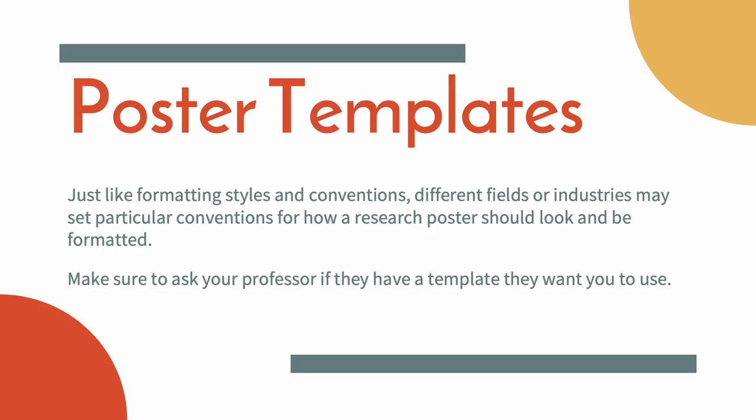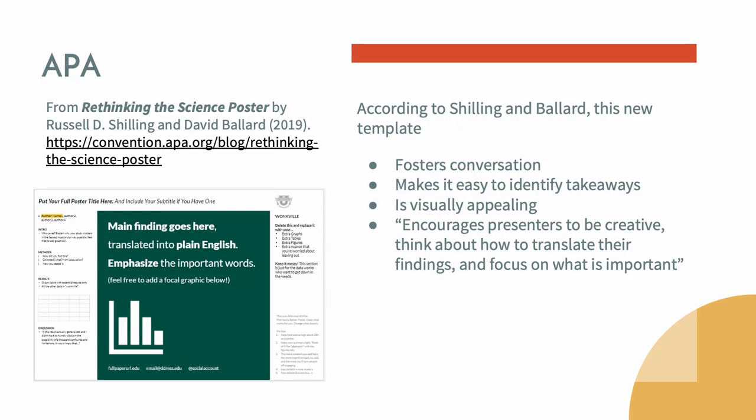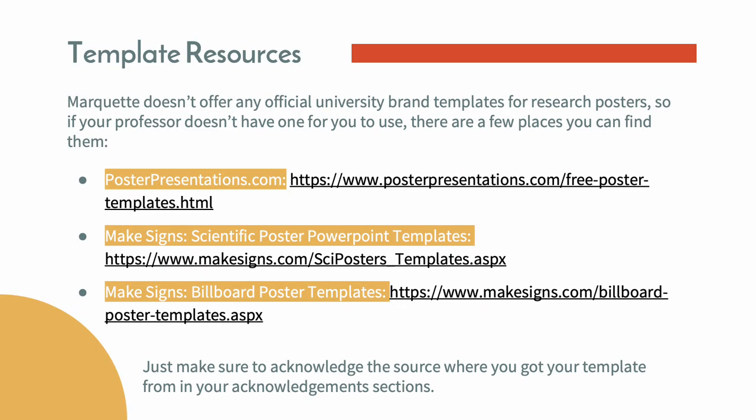Just like each discipline has a specific style convention, different fields, industries, or conferences may have specific poster design requirements or poster templates you are required to use. Always check with your professor first to see if they have a certain template or specific poster requirements they want you to adhere to. Here is an example of an APA poster template, which you can download and use as a starting point for your own poster design. Marquette doesn't have any official university-branded poster templates, but the links on this slide offer access to a plethora of poster templates. If you use one, be sure you cite it in the reference section of your poster.